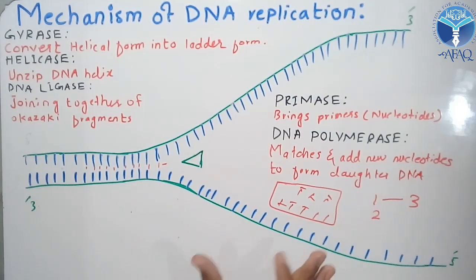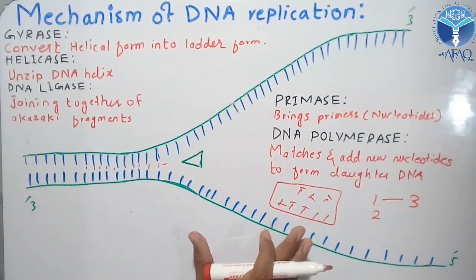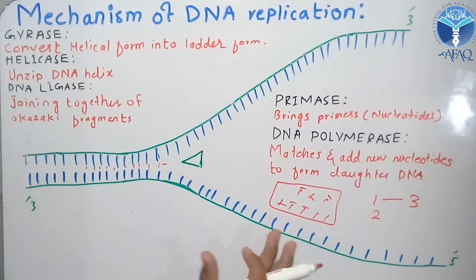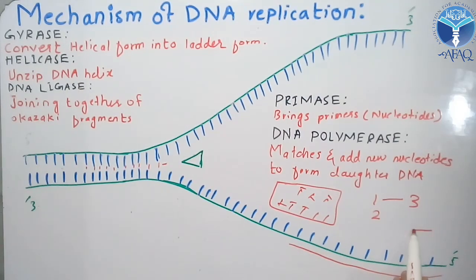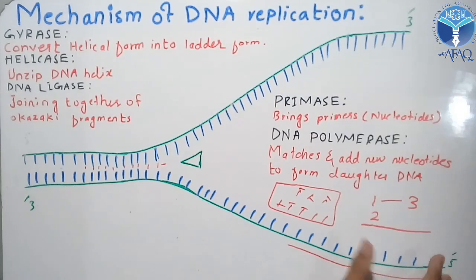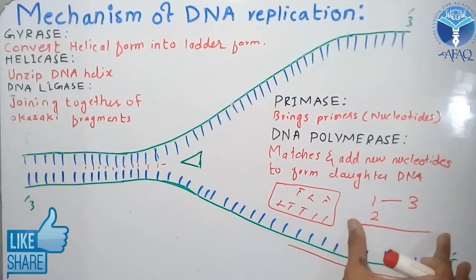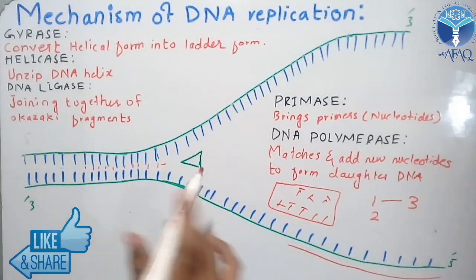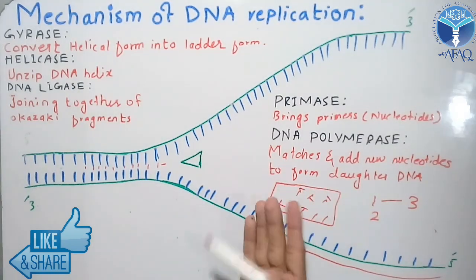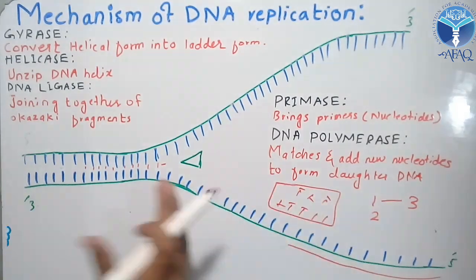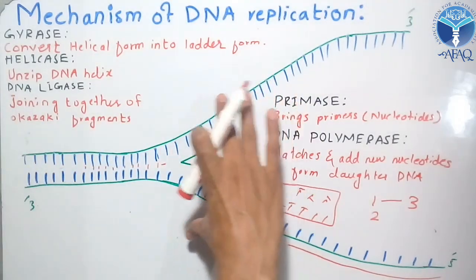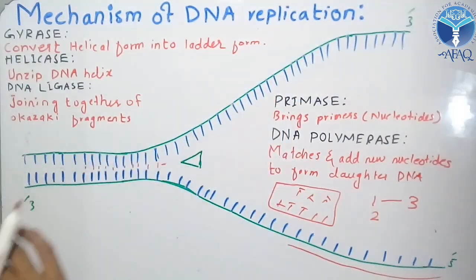DNA polymerase 3 actually synthesizes both daughter strands along the template. The data strand formation occurs due to DNA polymerase 3. So these are the main enzymes that ensure DNA replication.